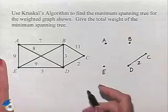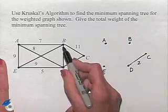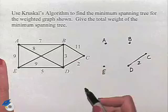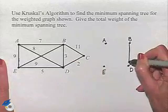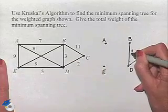The next smallest weight is going to be the edge from B to D. Notice it has a weight of 3, and we'll go ahead and draw that in and label its weight 3.